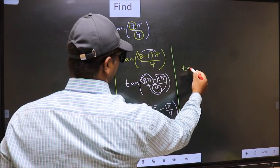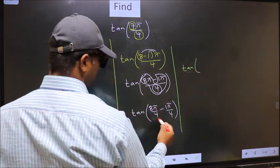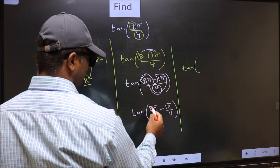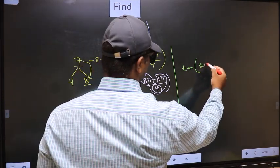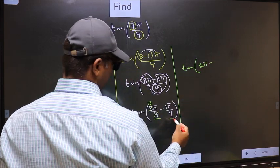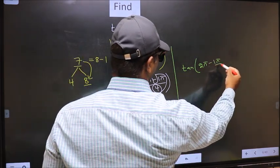Tan. Now here you should cancel. 4 goes into 4 once, 4 goes into 8 twice. So we get 2π minus this no change, 1π/4.